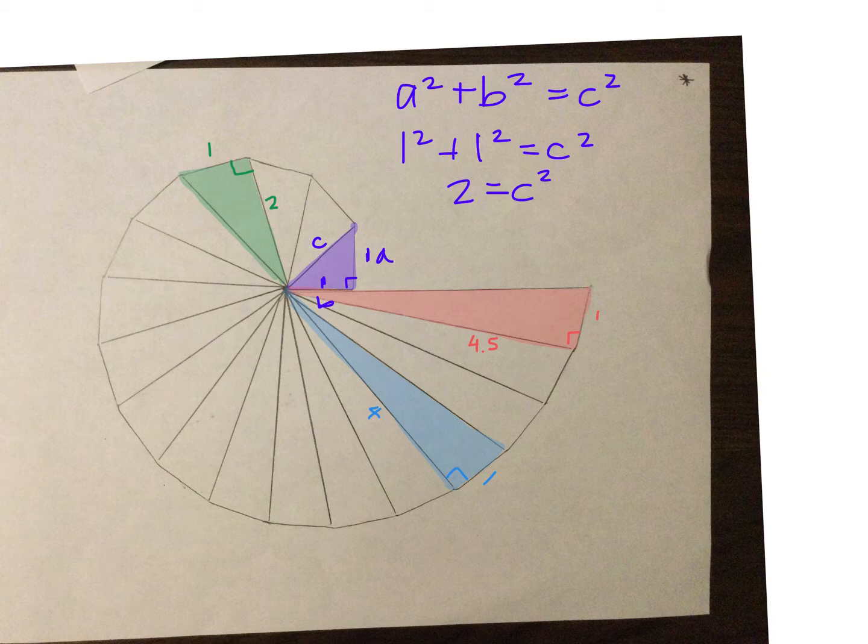And then if I square root that, because we know that's what I have to do, I'm going to get C equals 1.41.